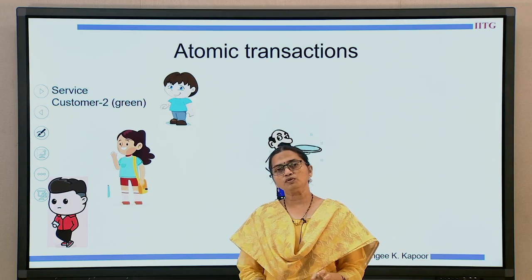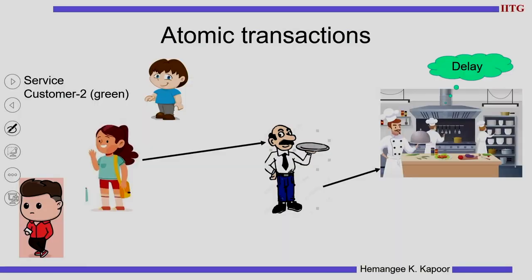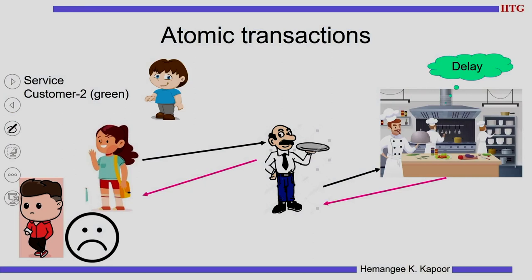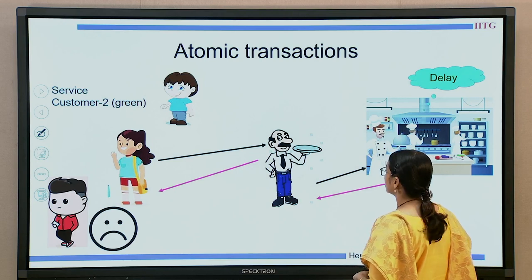Then customer number 2, in the green color, places the next order, but this order gets delayed — there is a delay because maybe a complicated dish was ordered. Eventually the order is ready and given to customer 2. In the meanwhile, customer 3 in the red shirt is unhappy because his order is never taken due to this one-by-one, or atomic, way of executing the transactions.